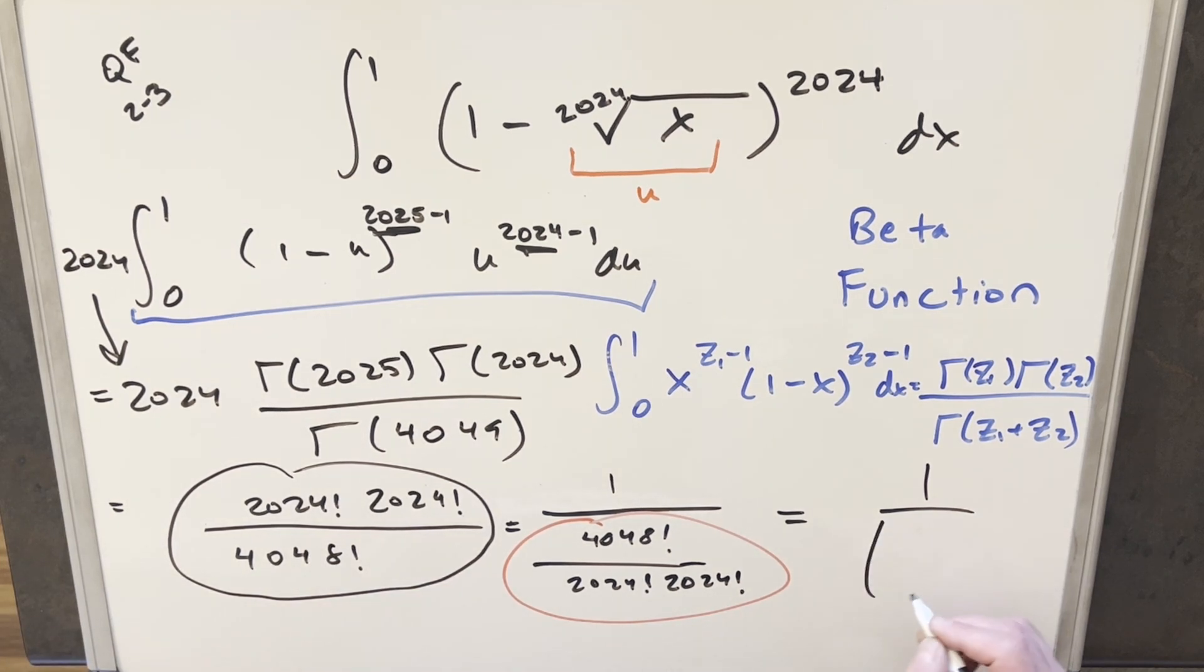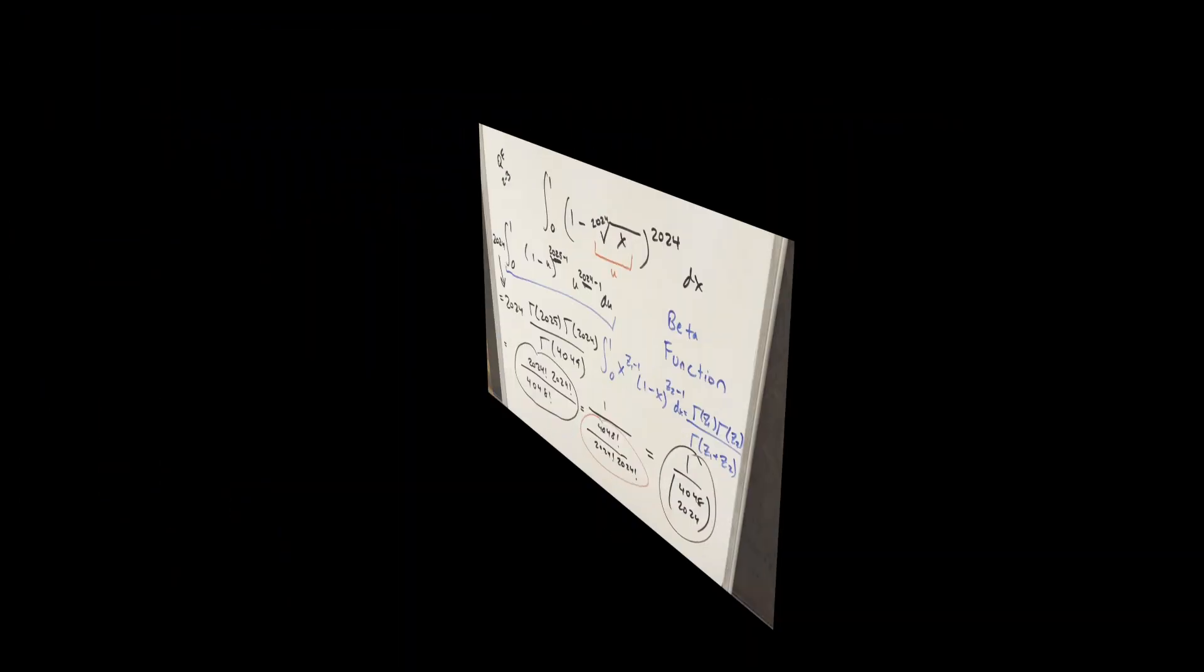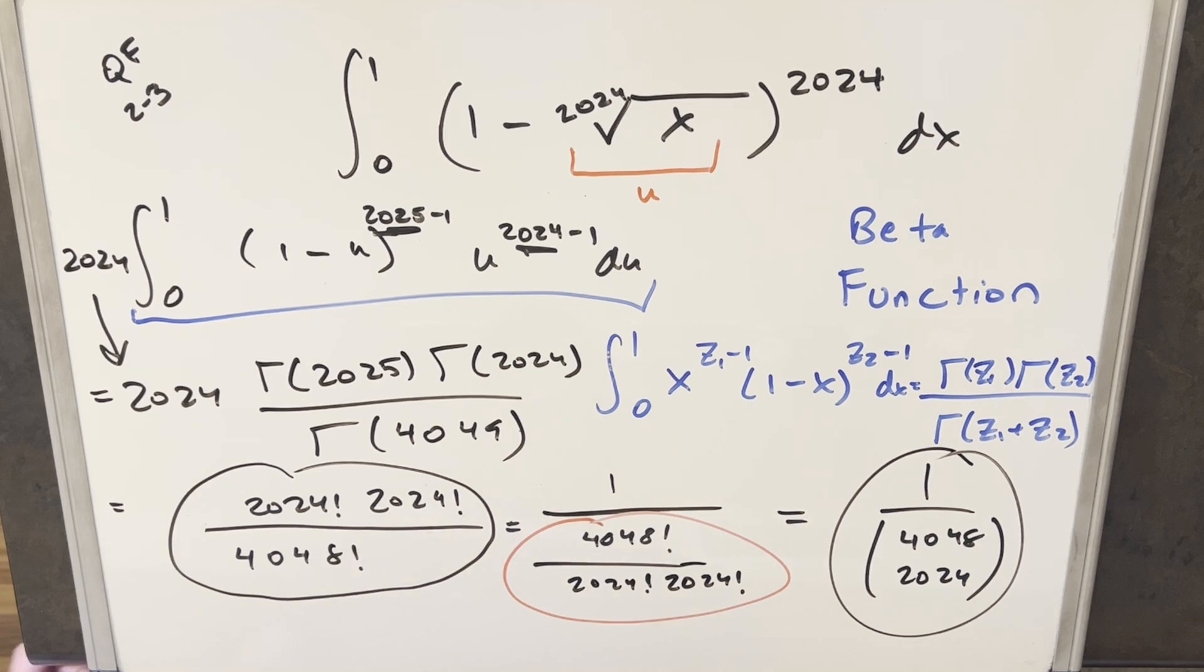because this thing right here is in the same form as the binomial coefficient or n choose k. So for my final solution, I can write this as 1 over 4048 choose 2024. And that's it. Okay, there you have it. Everyone's least favorite method, the beta function. Thanks everyone for watching. Have a good day.